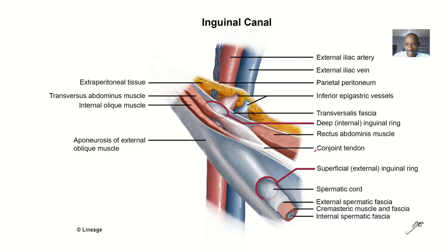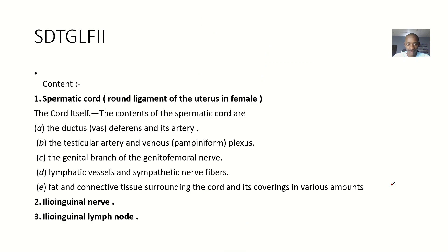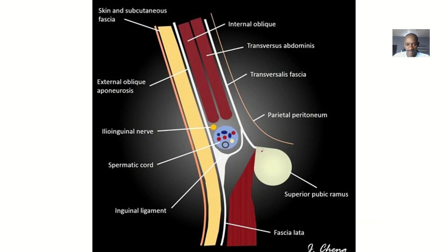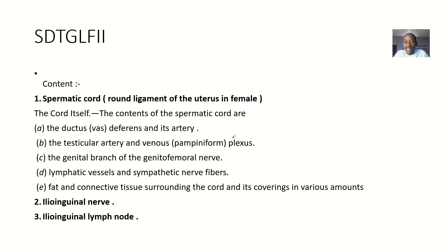So the contents of the inguinal canal — to be on a gross level — are the spermatic cord and the ilioinguinal nerve. So we have the spermatic cord, we have the ilioinguinal nerve, and we have the ilioinguinal lymph node. Next to the nerve, you have the lymph node.